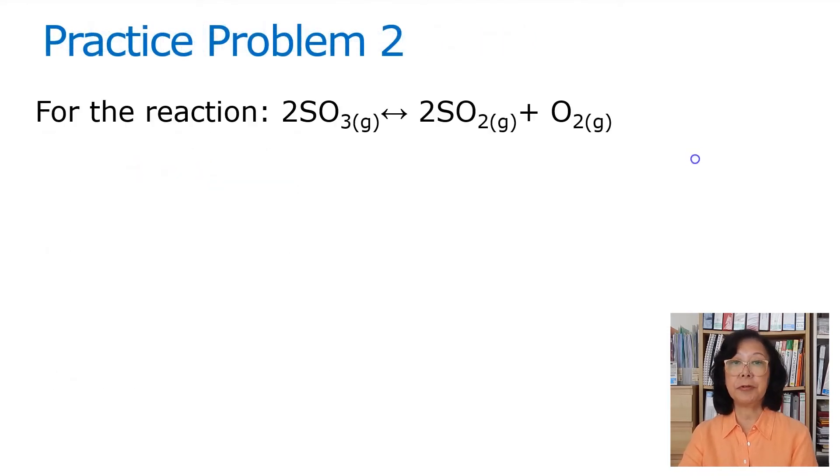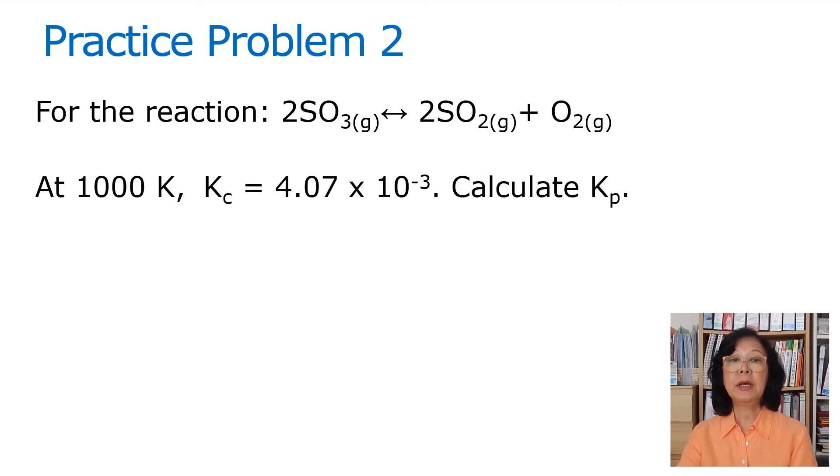Practice problem number two. For the reaction, two moles of sulfur trioxide decomposed to form two moles of sulfur dioxide and oxygen. At 1000 K, Kc is equal to 4.07 times 10 to the minus 3. Let's calculate Kp.